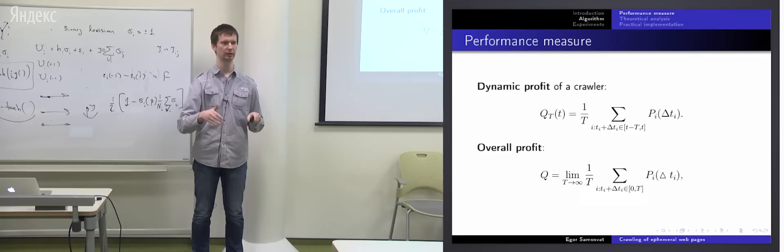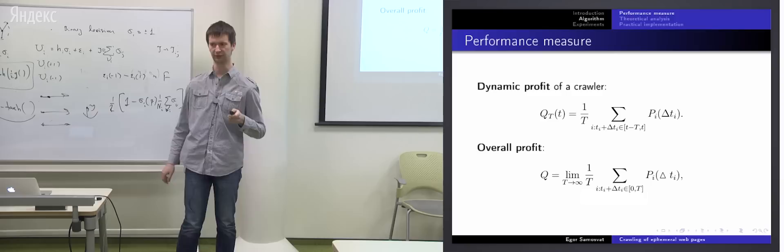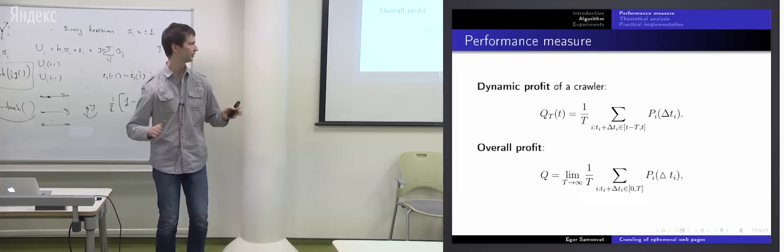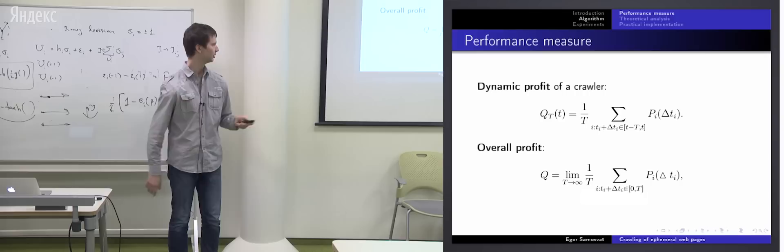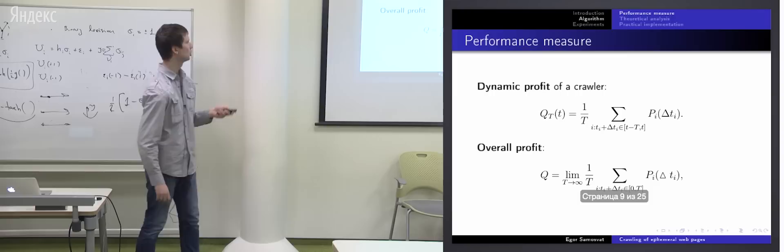Why we use this dynamic profit? Because actually we have strong temporal effects in the problem which we work. For example, in night, less pages are published. So a crawler can find less amount of pages. So this dynamic profit is useful for analyzing temporal effects. But if the process is stationary, we believe that if we take a large enough time window, for example weeks or months, then we can neglect these temporal effects. So we also define overall profit, like a dynamic profit but for a big time window. Okay, so we want to maximize this measure. And now let me state an optimization problem which we solved.